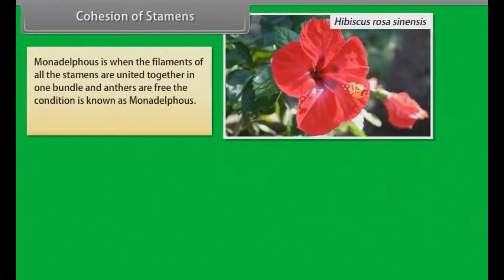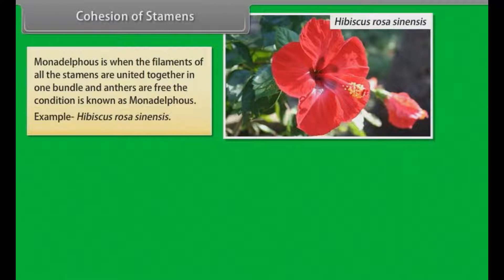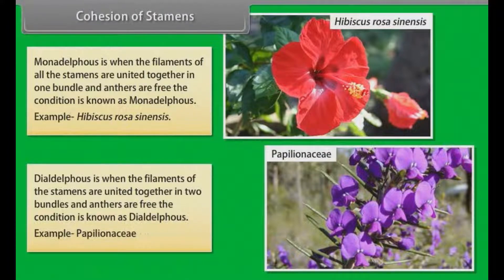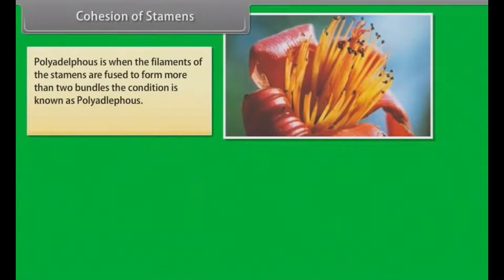Monadelphous is when the filaments of all stamens are united together in one bundle and anthers are free; example, Hibiscus rosa-sinensis. Diadelphous is when the filaments of the stamens are united together in two bundles and anthers are free; example, Papilionaceae. Polyadelphous is when the filaments of the stamens are fused to form more than two bundles; example, Citrus.